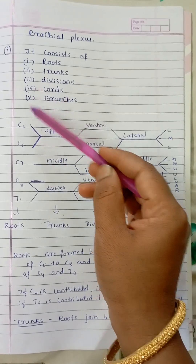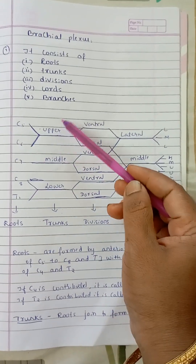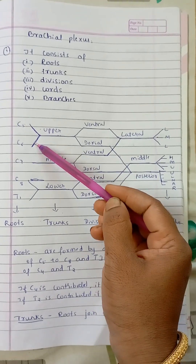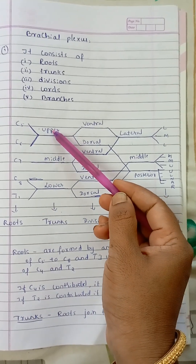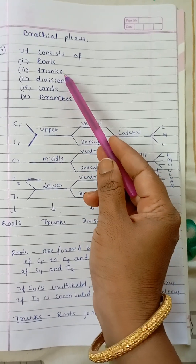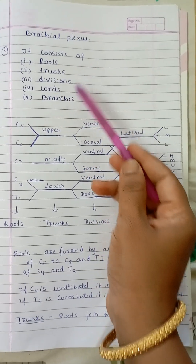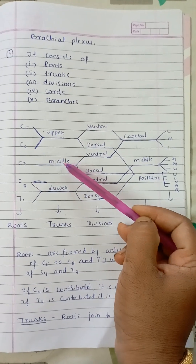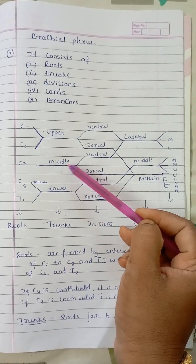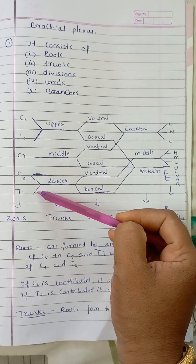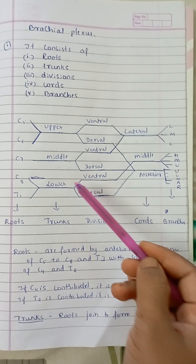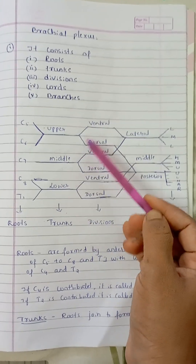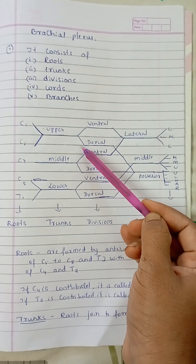These roots join to form the trunks. C5 and C6 join to form the upper trunk. C7 remains alone and forms the middle trunk. C8 and T1 join together to form the lower trunk.